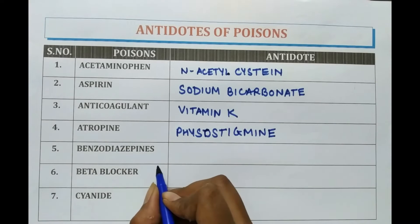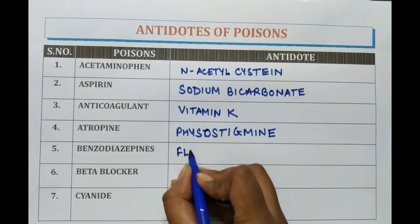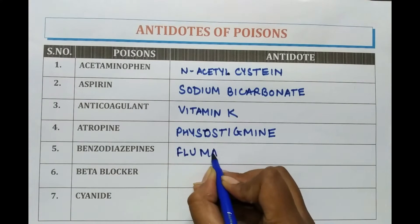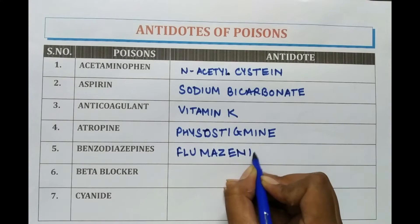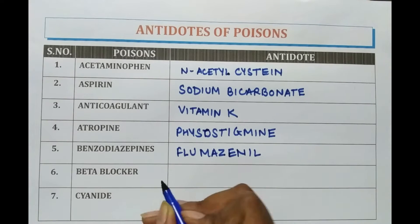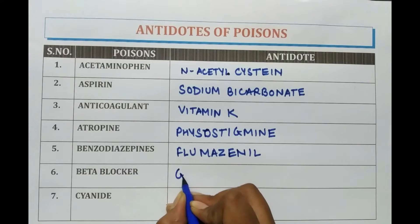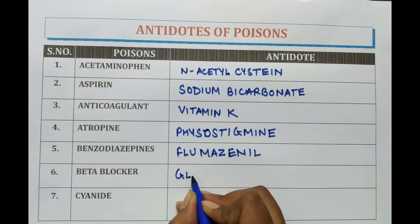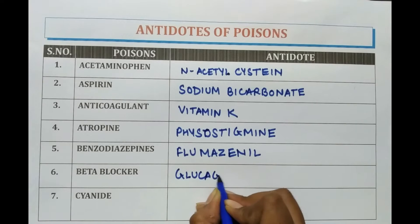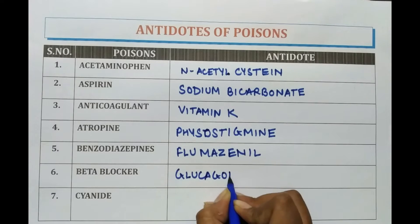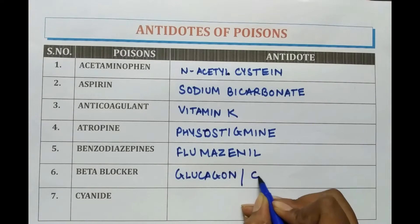In case of Benzodiazepine overdose, Flumazenil is used. In case of beta blocker poisoning, glucagon or calcium is used as an antidote.